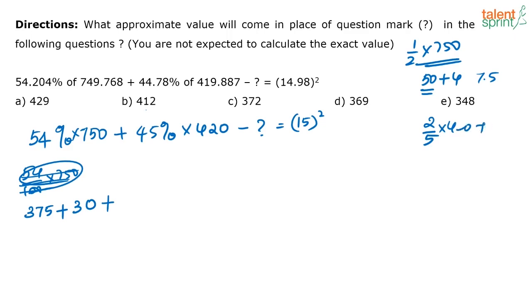So 2 by 5 of 420, plus you have 5 percentage of 420. What is 1 percentage of 420? 1 percentage of 420 is 4.2. So 4.2 into 5. What is 4.2 into 5? That is nothing but 21. So here 2 by 5 of 420 is 84. So you will have 168 plus 21.